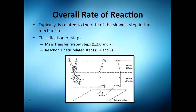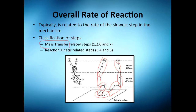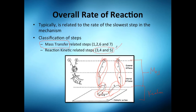The overall rate of reaction involves many steps — 1, 2, 3, 4, 5, 6, and 7. Steps 1, 2, 6, and 7 are about mass transfer phenomena, covering both external and internal diffusion. Steps 3, 4, and 5 are more about reaction kinetics. We're going to focus a bit more on these kinetic steps.